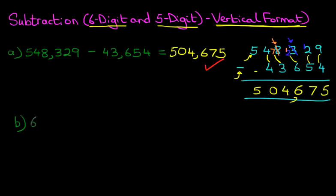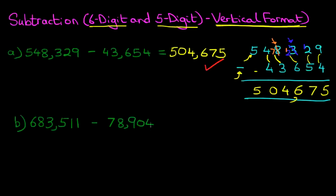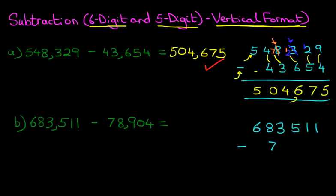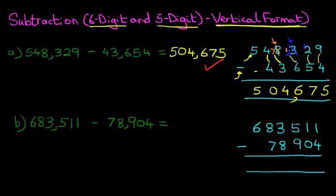This time, we have 683,511 subtract 78,904. The first step is to rewrite the question in nice, neat columns, so we're going to do that over here: 683,511 subtract 78,904. Okay, we've done that. Now we're ready to do the subtraction.